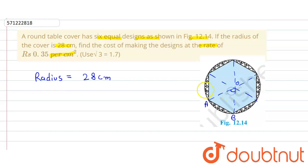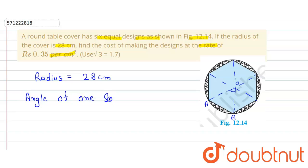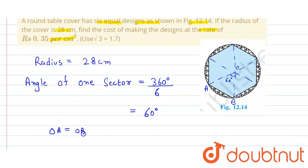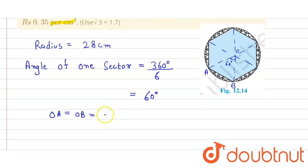First we find the angle of one sector. The angle of one sector equals the complete angle of 360 degrees divided by 6, which equals 60 degrees. Here OA equals OB equals the radius, which is 28 centimeters, where O is the center of the circle.